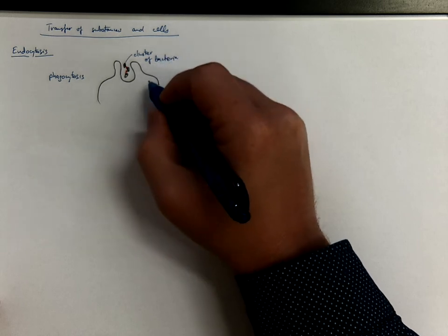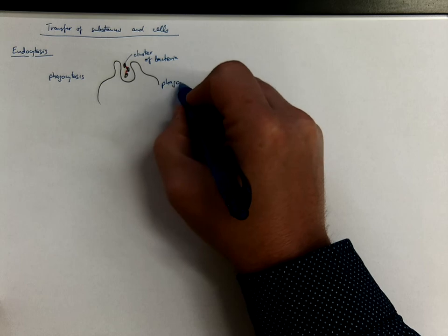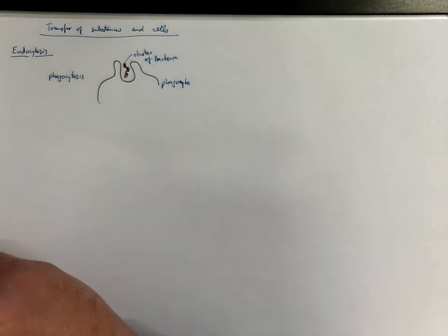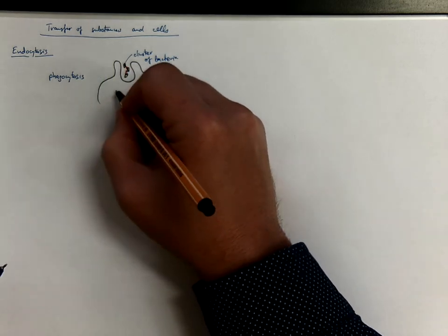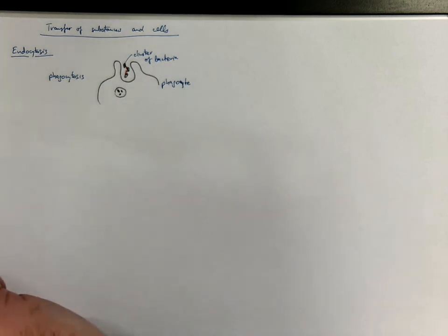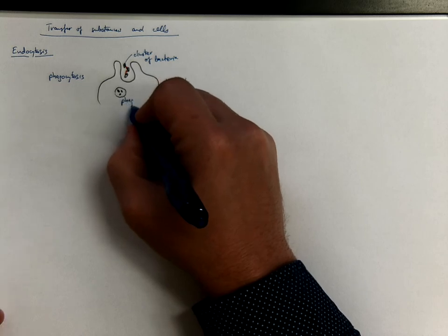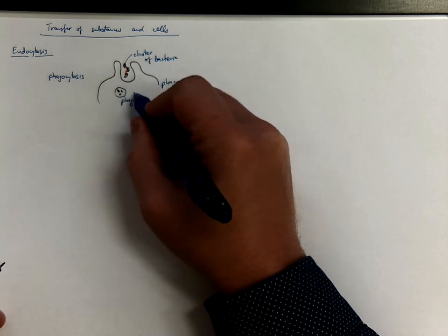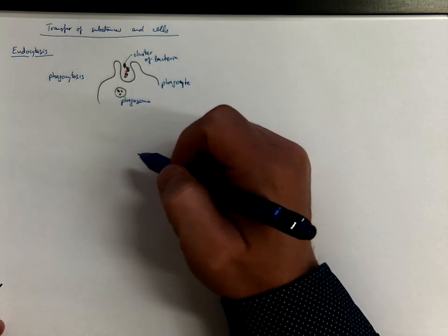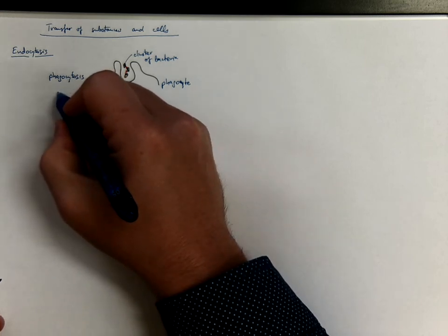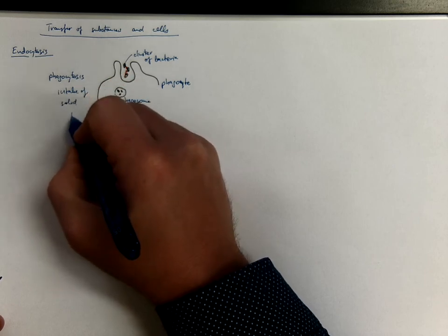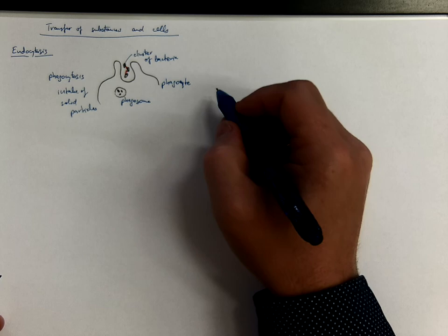This would be a phagocyte, and after surrounding, they are taken in to form a phagosome, which might eventually fuse with a lysosome with degradation enzymes and be processed accordingly. So this is intake of some solid particles.